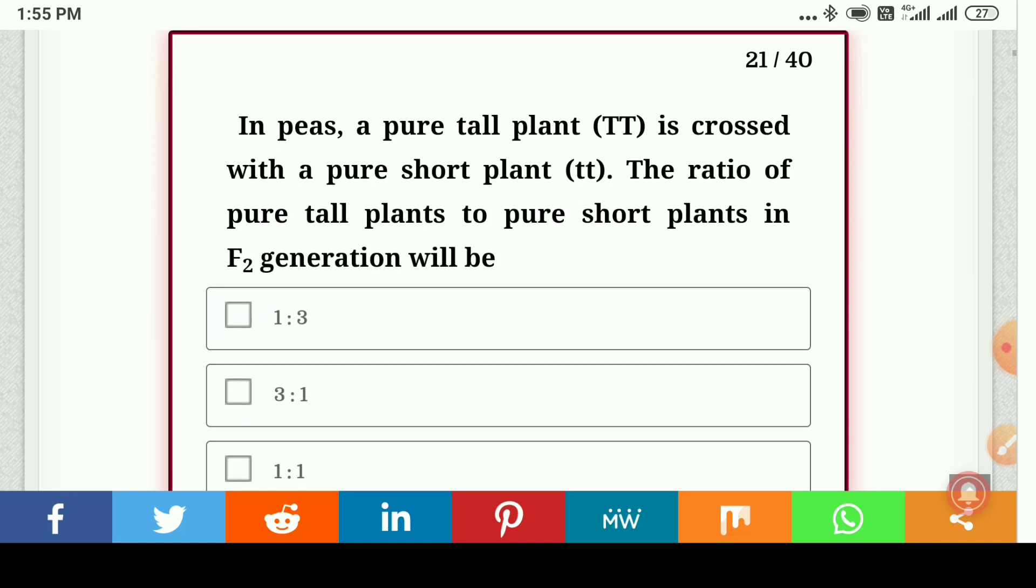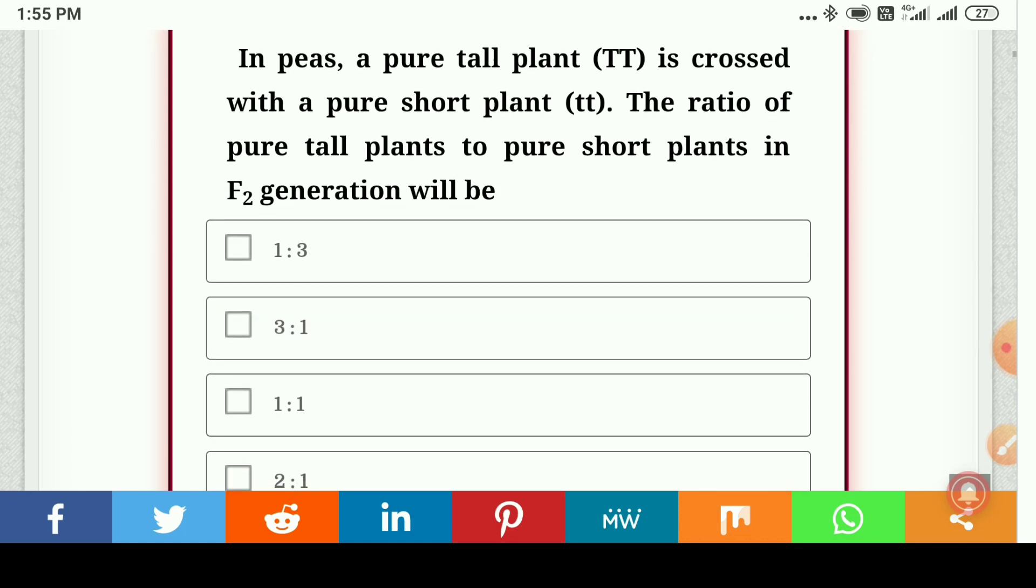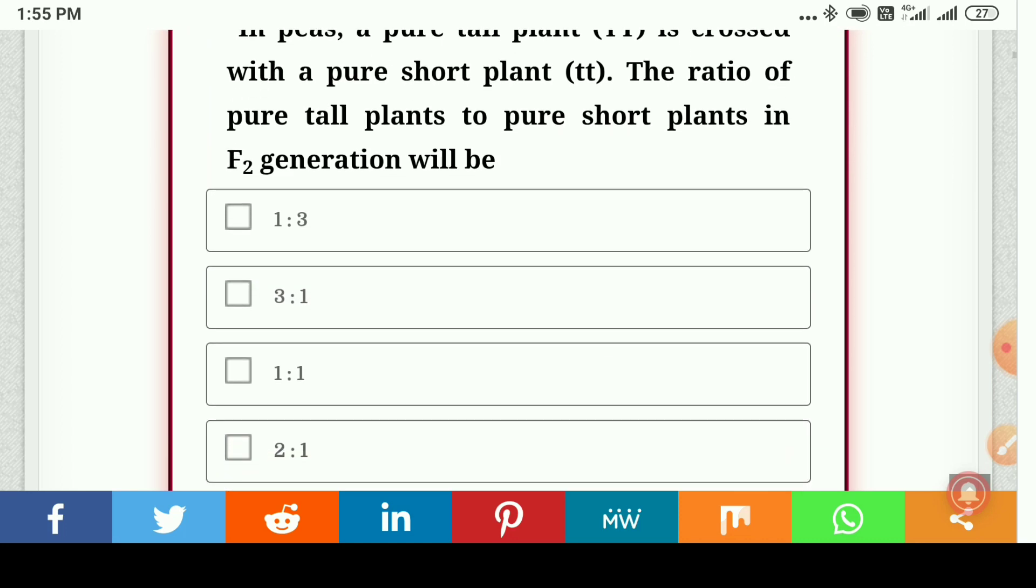In peas, a pure tall plant that is TT is crossed with the pure short plant tt. The ratio of pure tall plants to pure short plants in F2 generation will be... answer is 1 is to 1.